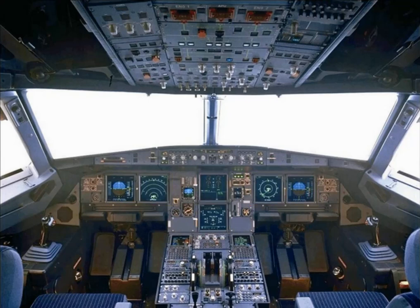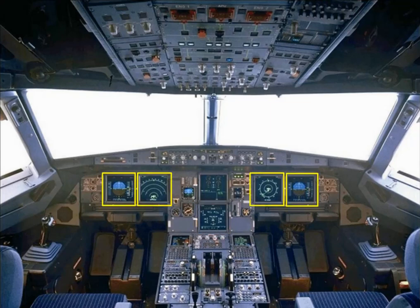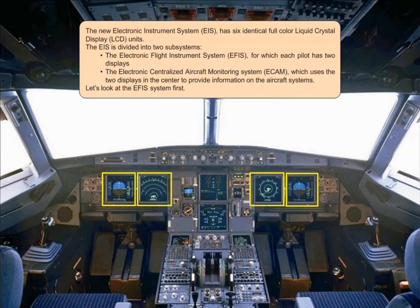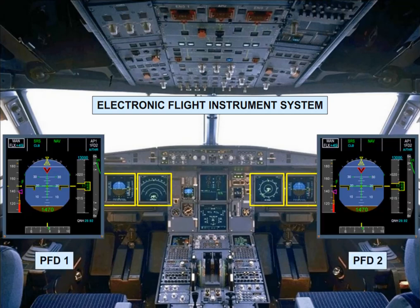The EIS is divided into two subsystems: the Electronic Flight Instrument System (EFIS), for which each pilot has two displays, and the Electronic Centralized Aircraft Monitoring system (ECAM), which uses the two displays in the center to provide information on the aircraft systems. Flight parameters are displayed on Primary Flight Displays (PFDs), while navigation data is displayed on Navigation Displays (NDs).